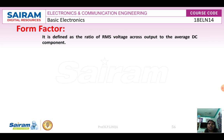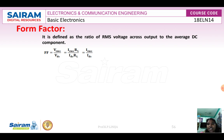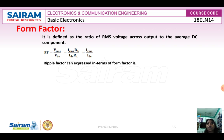Next is the form factor, defined as the ratio of RMS voltage across the output to the average DC component: VRMS divided by VDC. Since V equals IR, VRMS equals IRMS × RL and VDC equals IDC × RL. The RL cancels in numerator and denominator, so the form factor equals IRMS divided by IDC. The ripple factor can be expressed in terms of the form factor as: gamma equals the square root of (form factor)² minus 1.